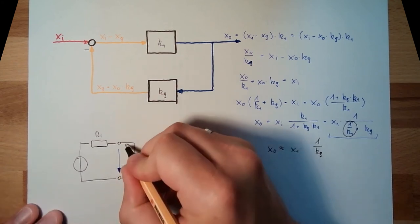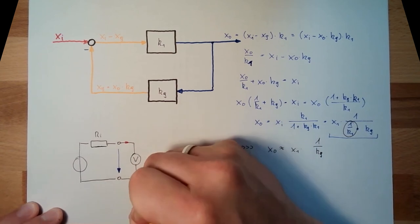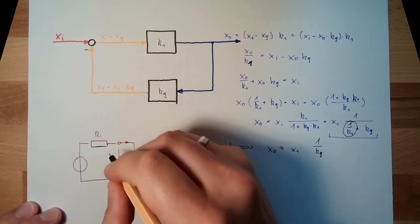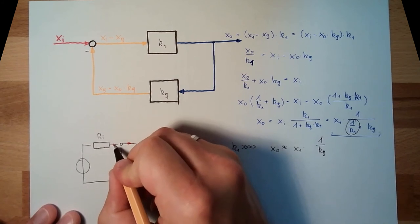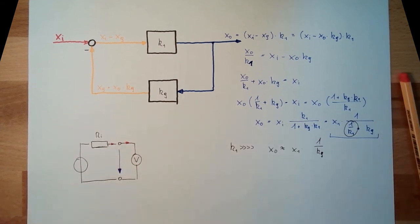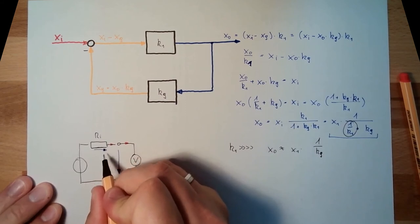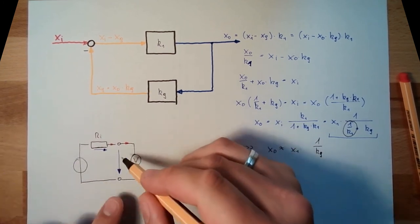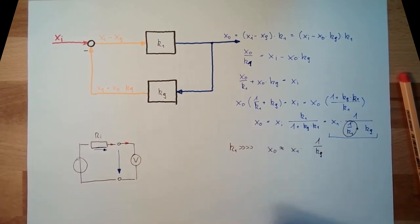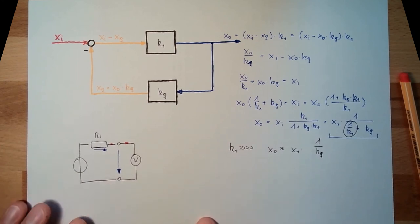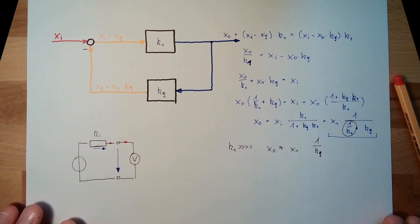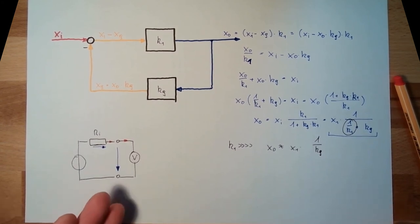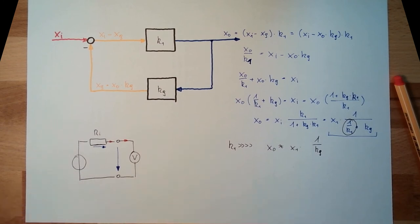There's some current running through. And this current is also running here. And this current will make a voltage drop here. This voltage drop was not there before. Now, just because I added my measurement system, I did an error. By the way, that's our next topic, reliability. And this is one example of a so-called systematic error. I cannot avoid this. I will make an error.